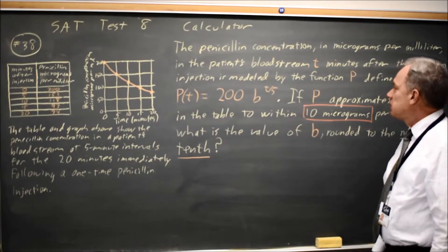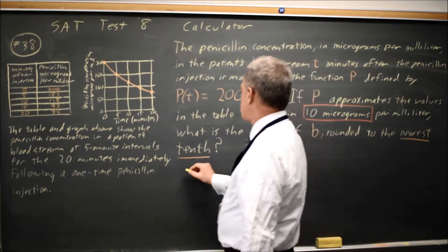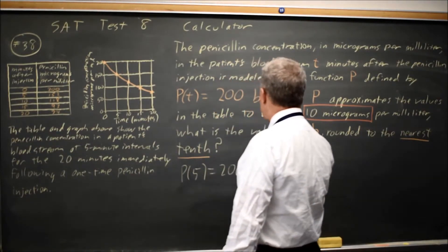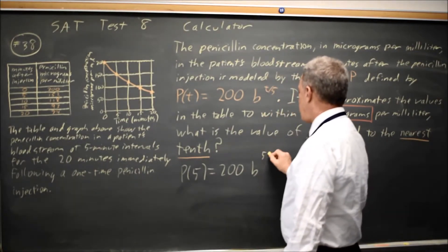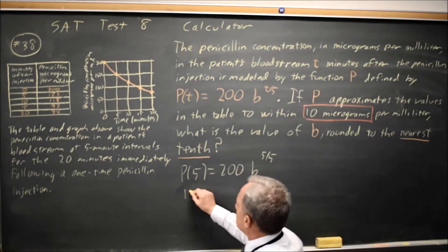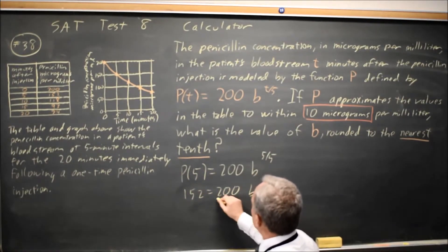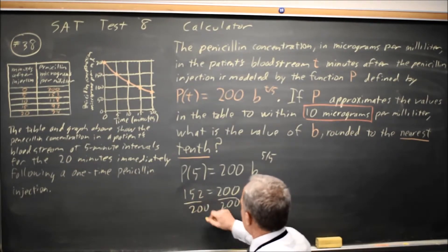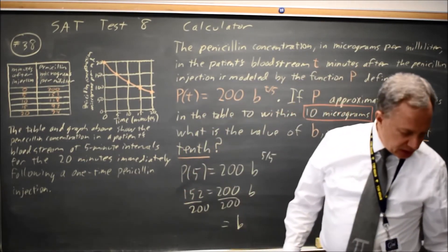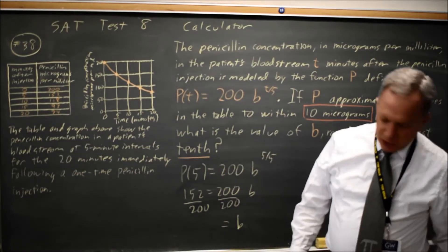Alternatively, at t equals 5, p of 5 equals 200, 200 times b to the 5 over 5, and the table says p of 5 is 152. Dividing by 200, b equals 152 over 200, which is 0.76.